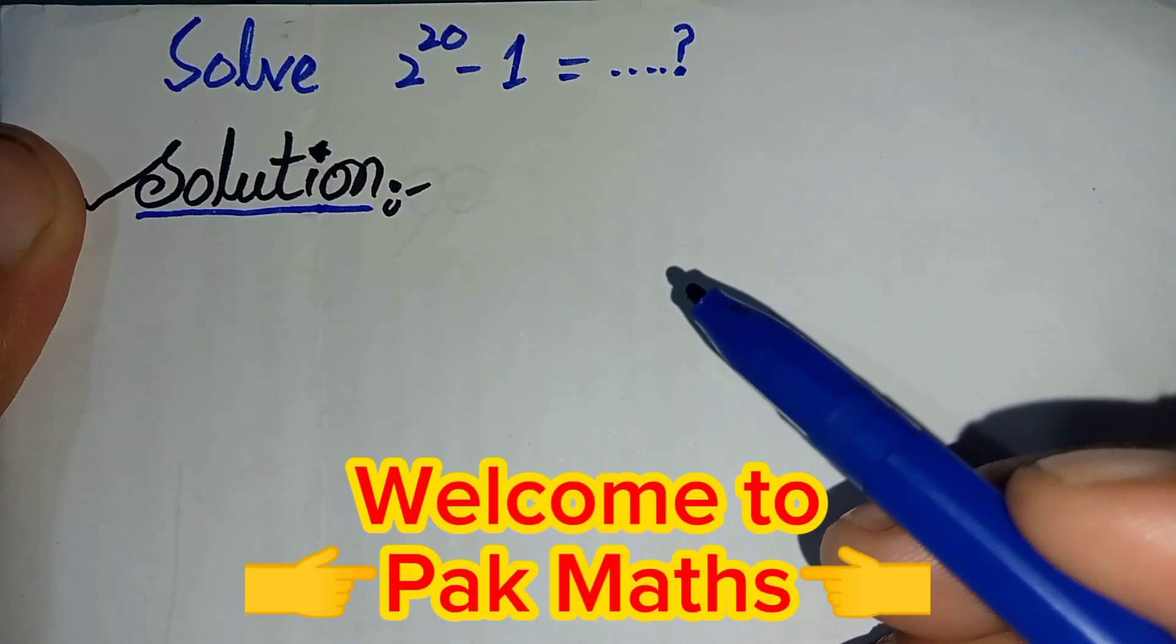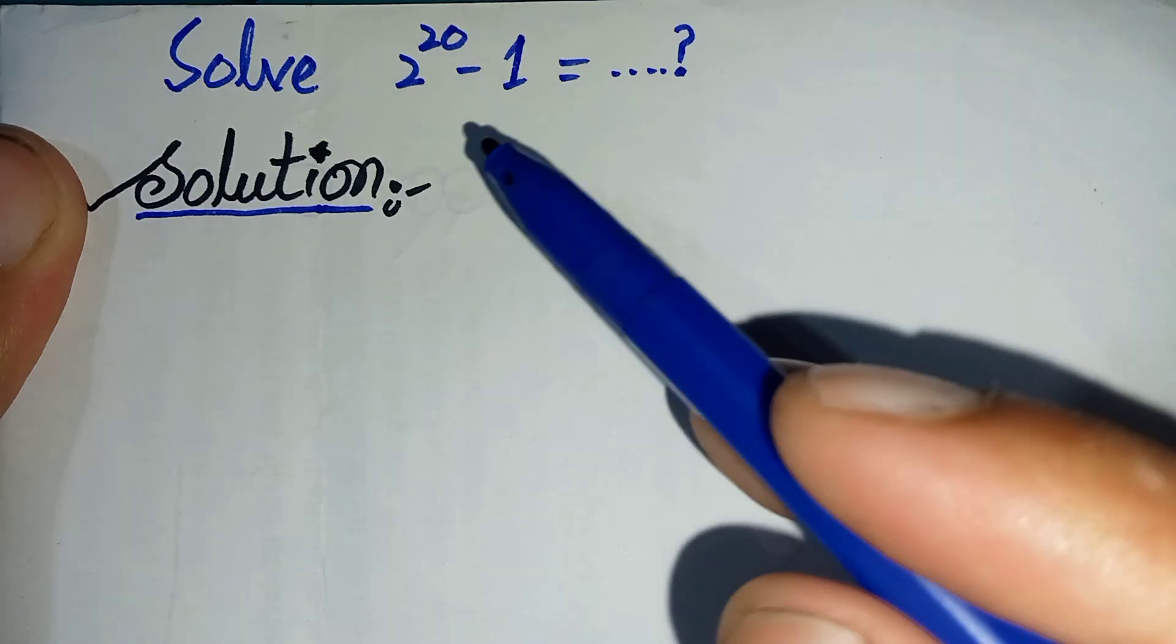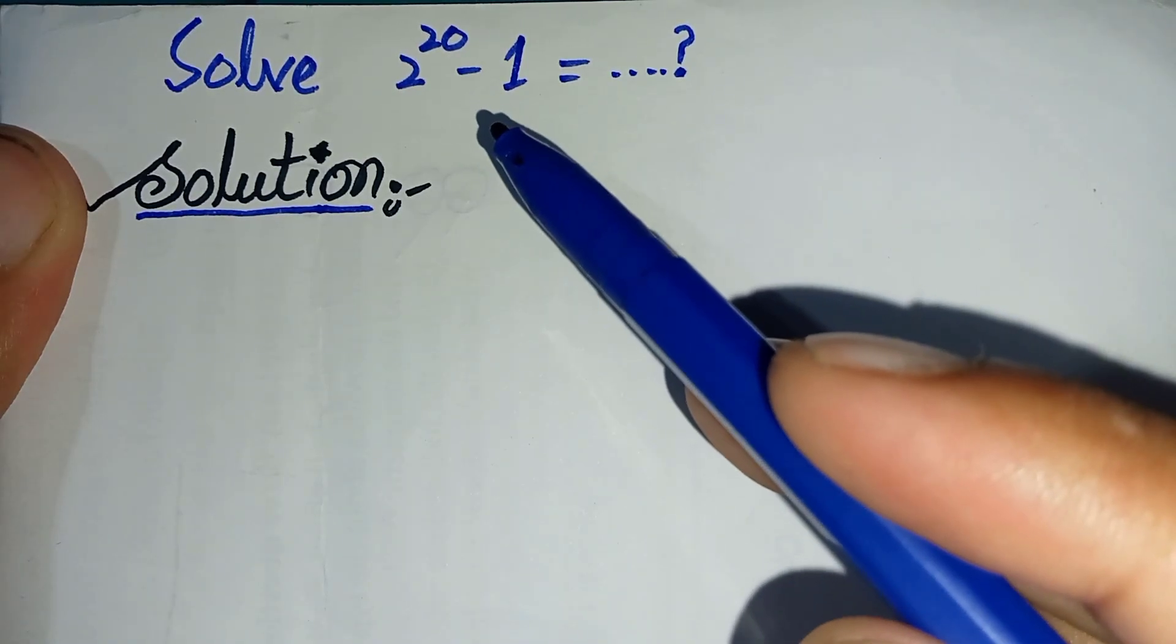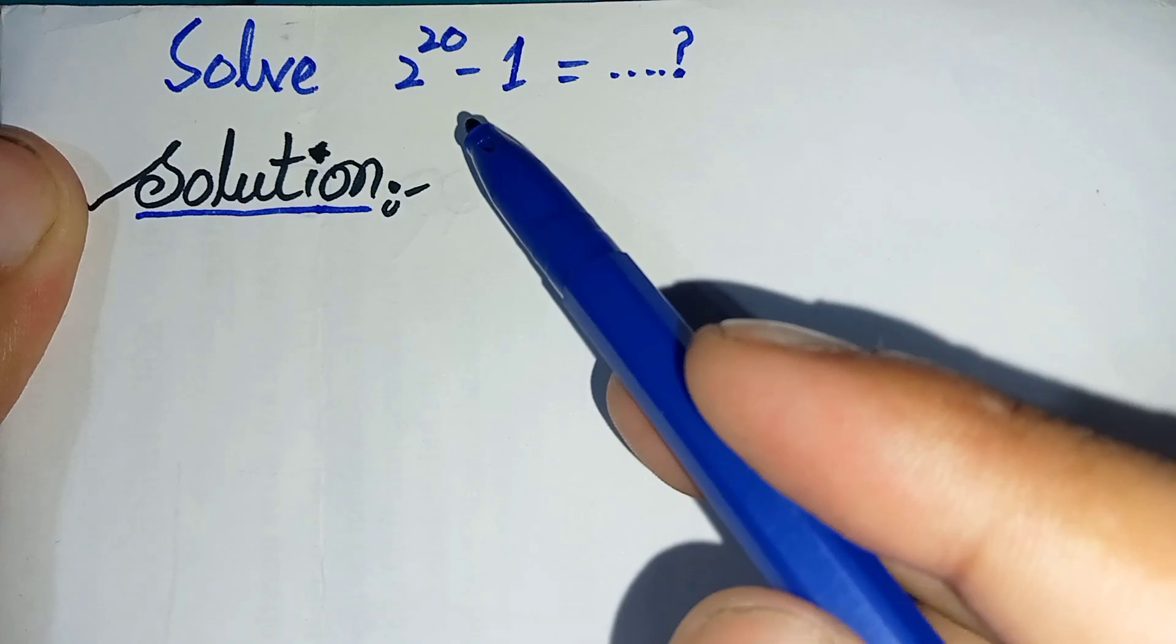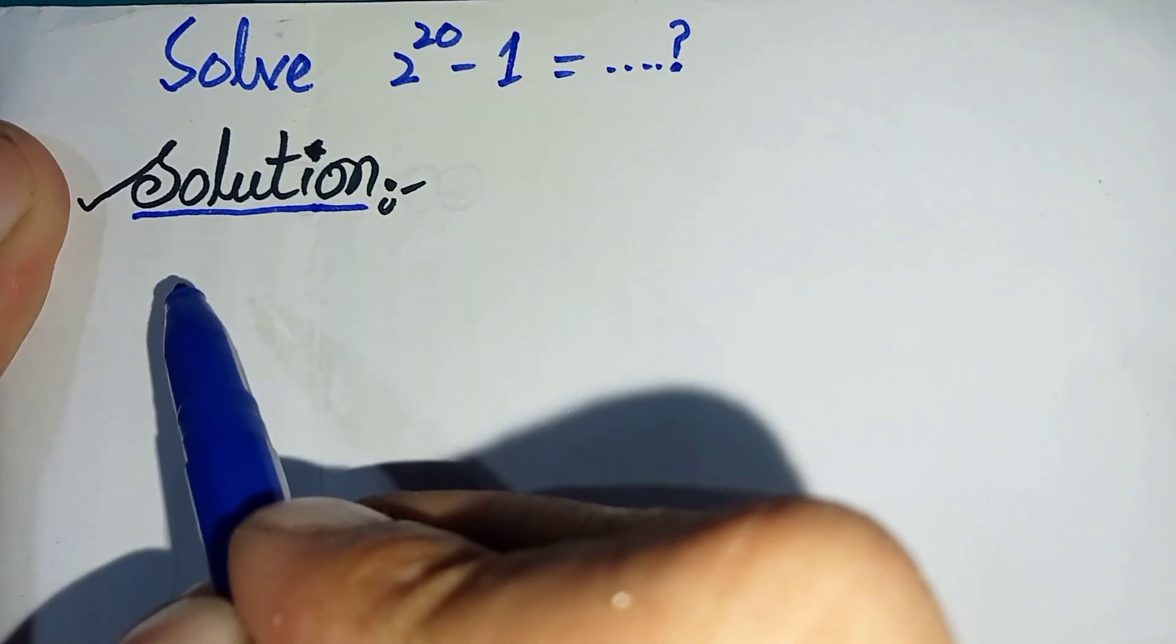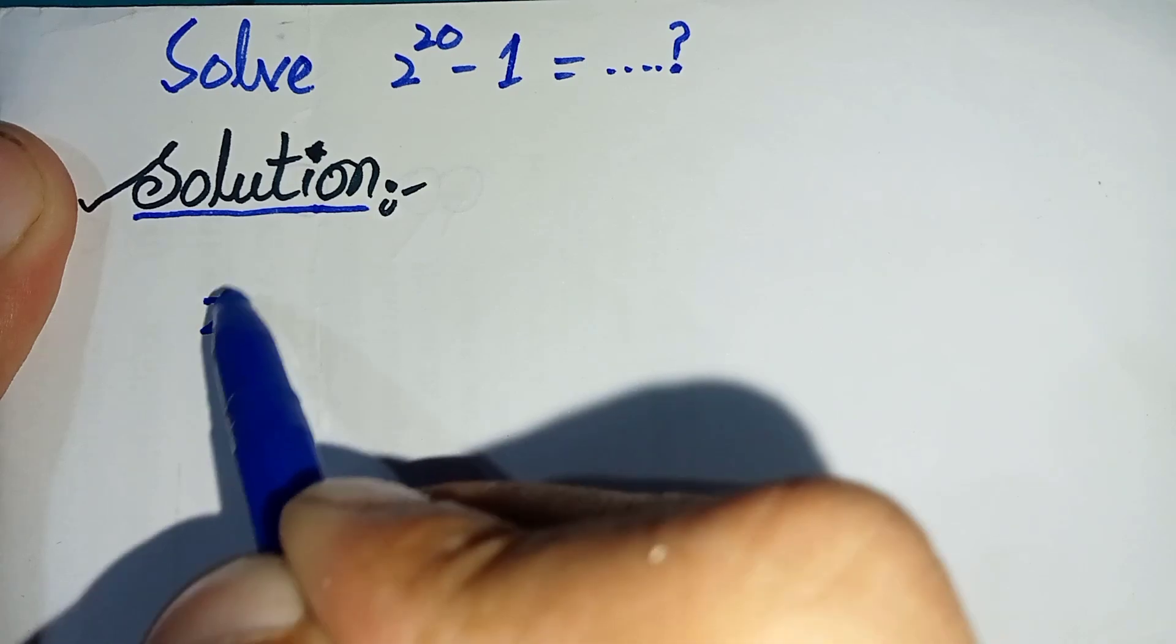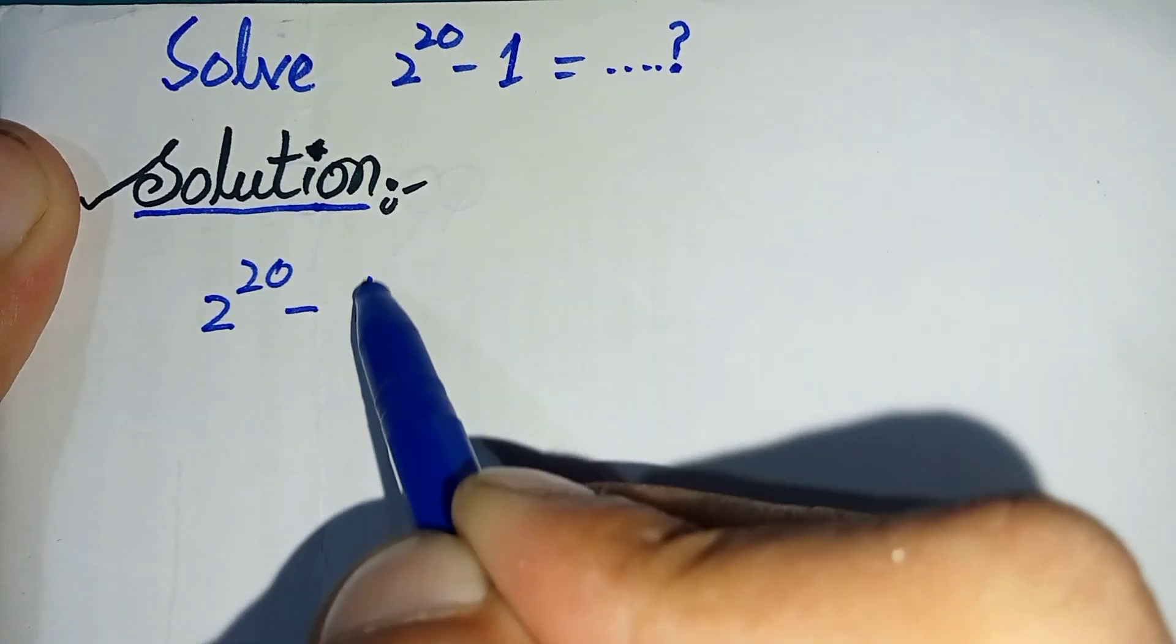Hello, welcome to Parkmas. In this video we will learn how to solve this viral math problem. Let's start. First we will rewrite the question in our solution. The question is: Solve 2^20 - 1 = ...?